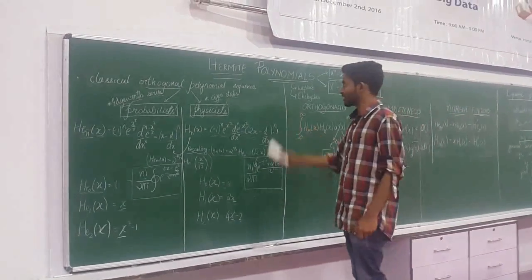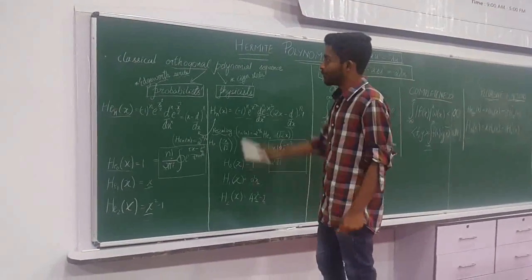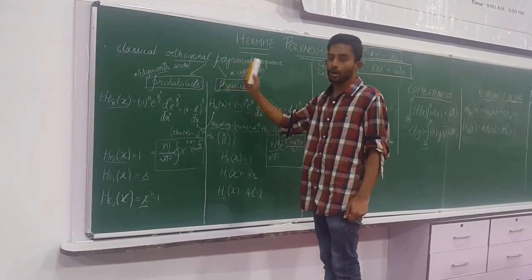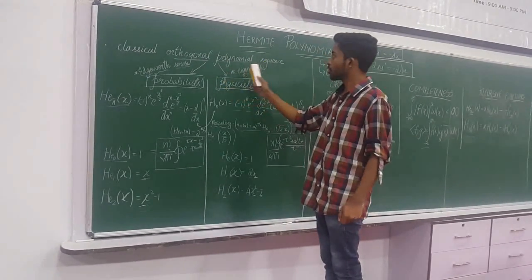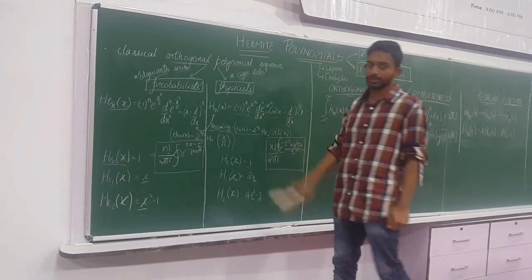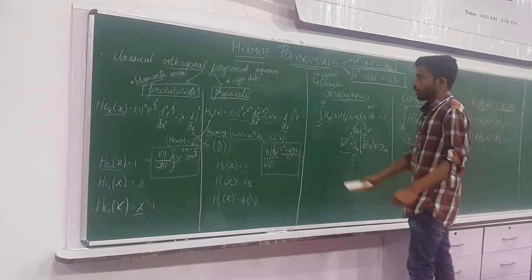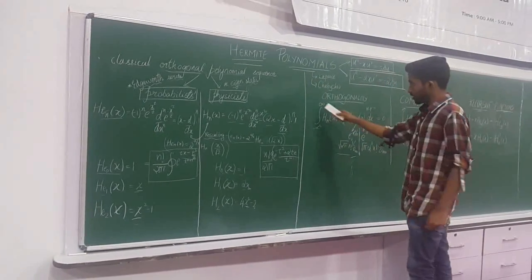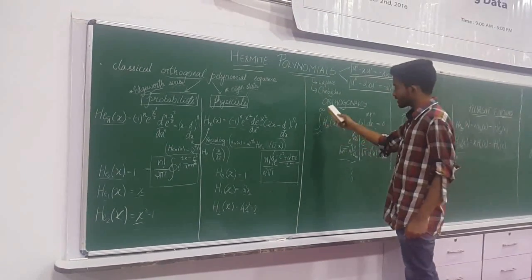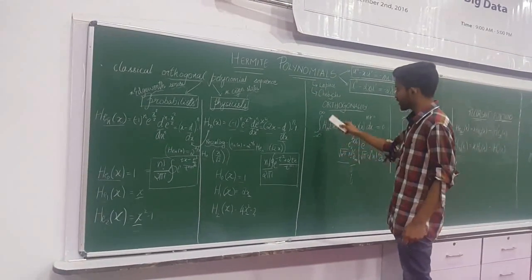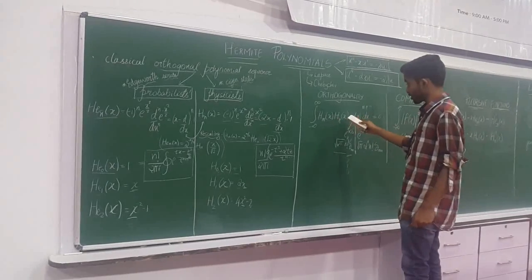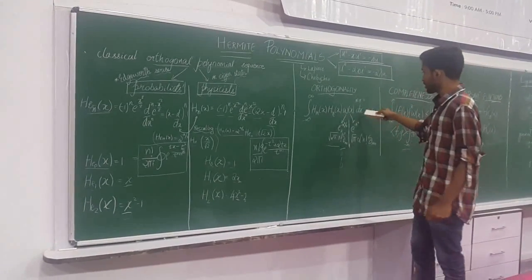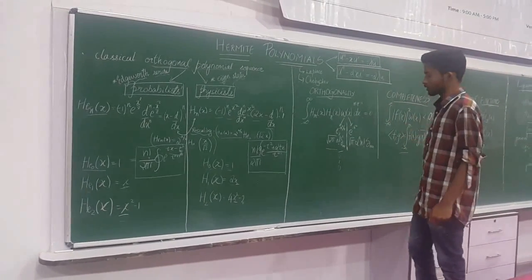Now let us learn Hermite polynomials. Hermite polynomials are classical orthogonal polynomial sequences, where orthogonality means the integral from minus infinity to infinity of H_m(x) times H_n(x) over a weighted function is equal to 0.